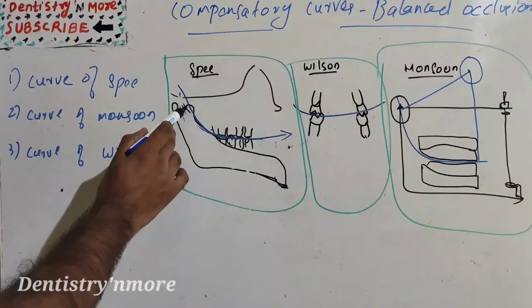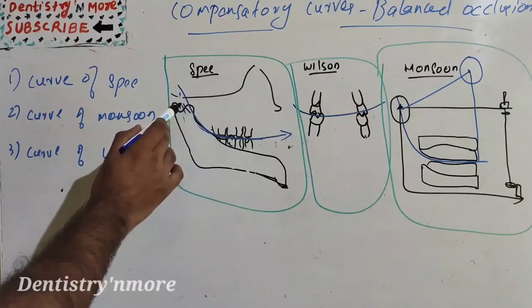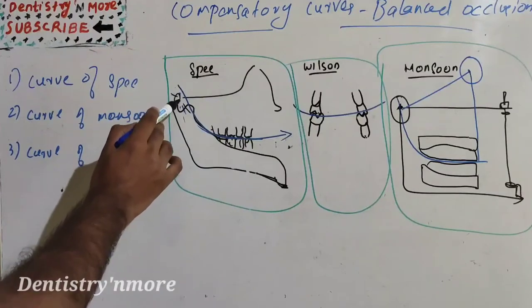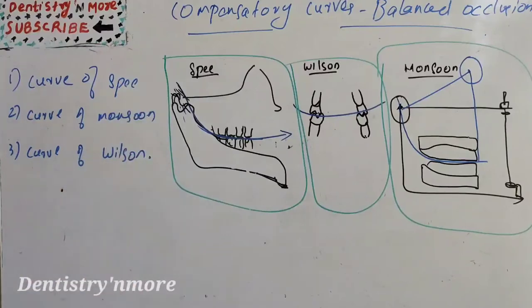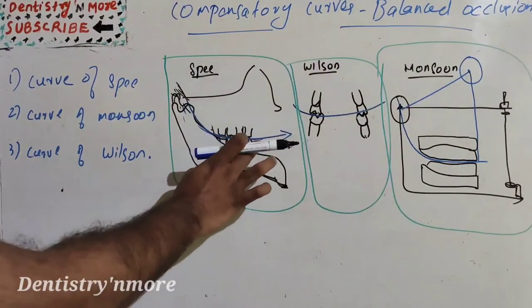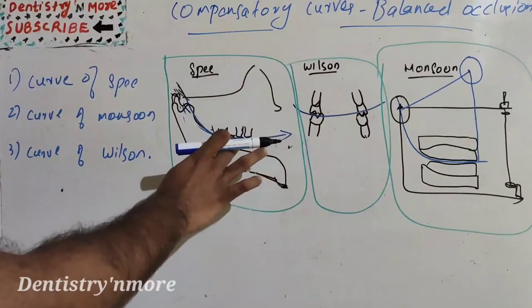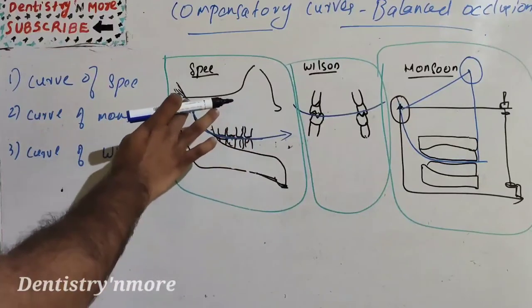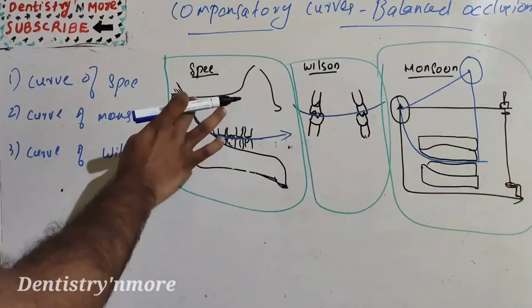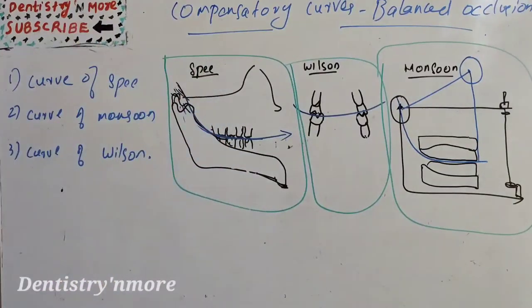It ends with the anterior most portion of the mandibular condyle. So don't worry about this picture, it's not a perfect picture. Anyway, it's starting from canine following the buccal cusps of premolars and molars, the anterior border of the ramus, then the anterior most portion of the mandibular condyle.